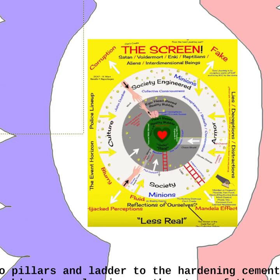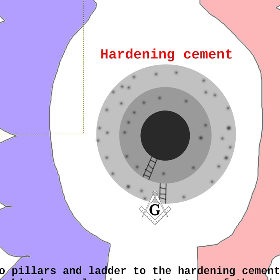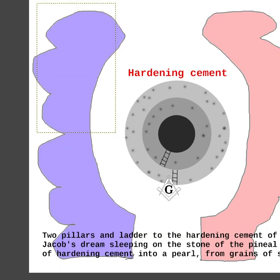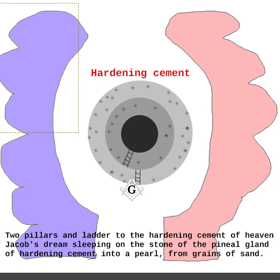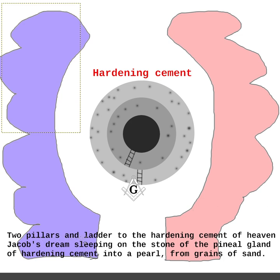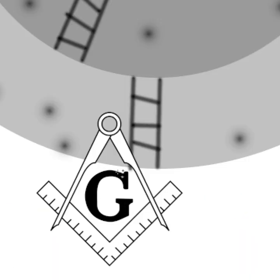So what I did is I made my own interpretation of this art, which looks like this. I only have hardening cement there. I still have the brain — two sides of the brain — and I have the text. You can see the text also: two pillars and ladder to the hardening cement of heaven. Jacob's dream, sleeping on the stone of the pineal gland of hardening cement into a pearl from grains of sand. And this is what it's about. You can see I have this Freemasonic thing here as well.